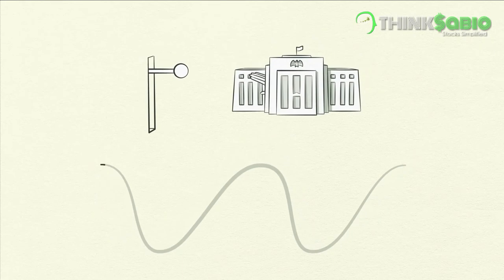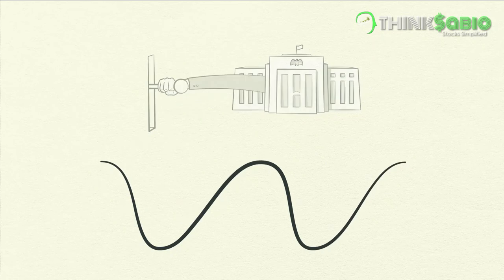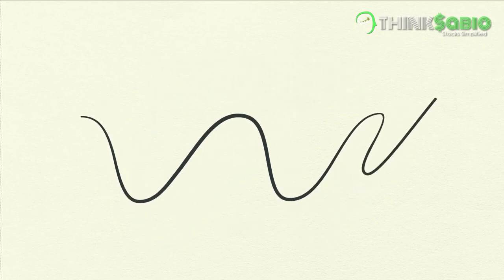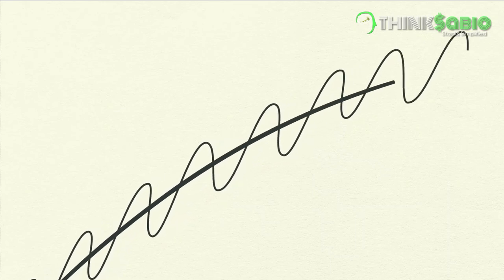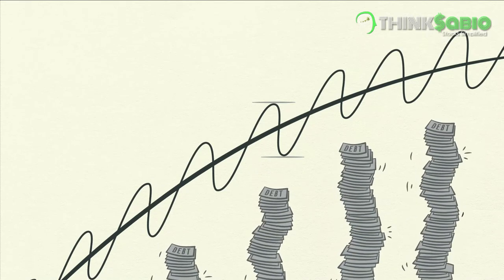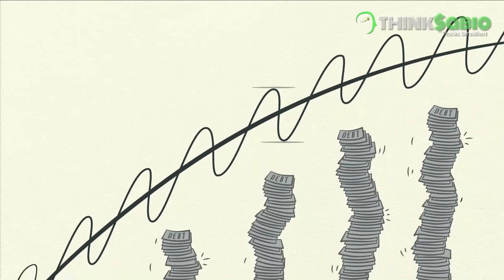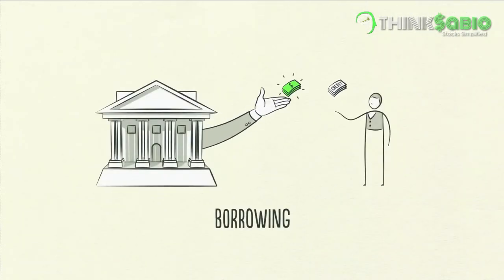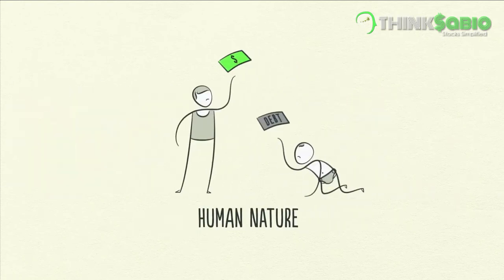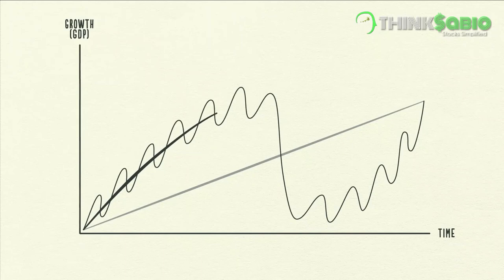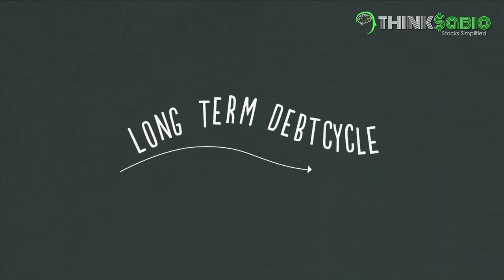The short-term debt cycle is controlled primarily by the central bank. It typically lasts five to eight years and happens over and over again for decades. But notice that the bottom and top of each cycle finish with more growth than the previous cycle and with more debt. Why? Because people push it — they have an inclination to borrow and spend more instead of paying back debt. It's human nature. Because of this, over long periods of time, debts rise faster than incomes, creating the long-term debt cycle.